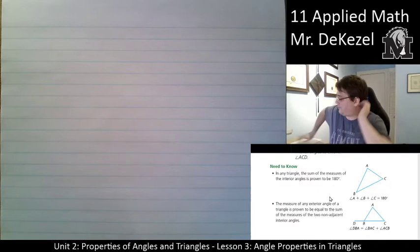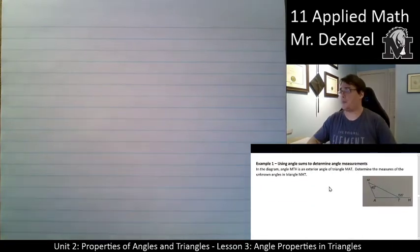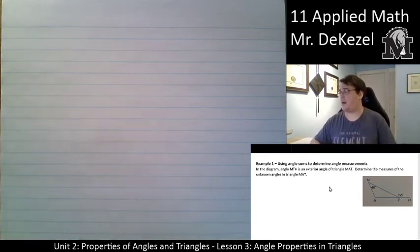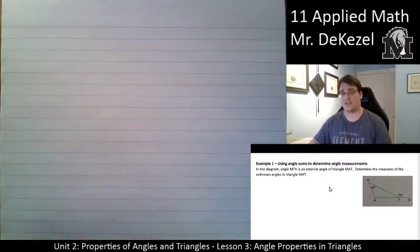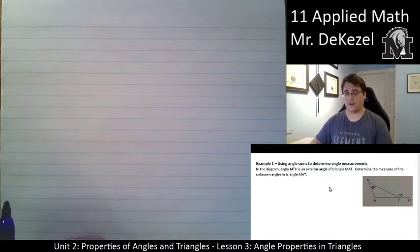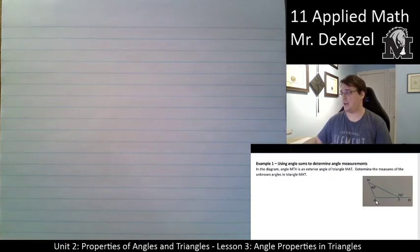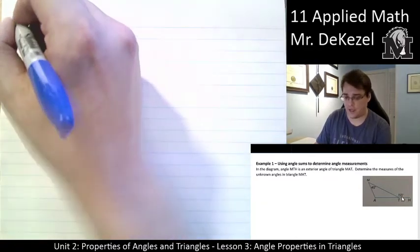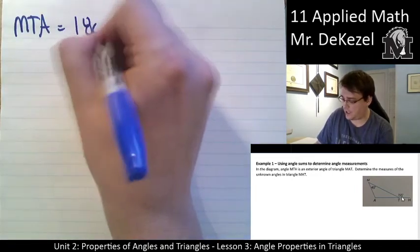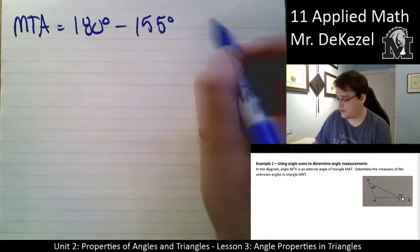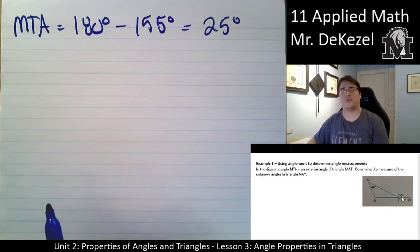So let's get to example one. Use angle sums to determine the angle measurement. So in the diagram, angle MTH, so that's the exterior angle, 155 degrees, is given. We also have the angle AMT, so that would be 40 degrees. We want to determine the unknown angles. So one thing we can do, we can find angle MTA by using the 180 degree rule, where we have a line and we have a transversal. So angle MTA is equal to 180 degrees subtract 155 degrees, and it is then 25 degrees.